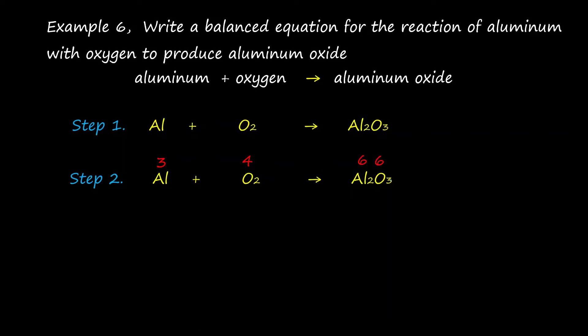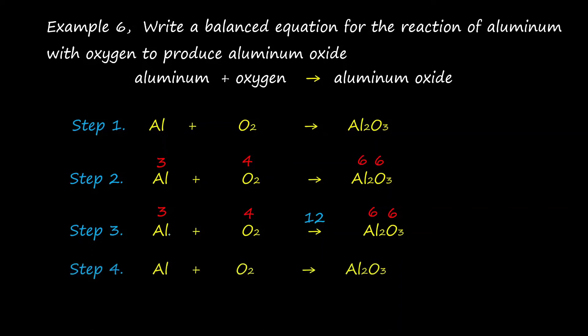The third step is to find the LCM of the total valences. The LCM of three, four, and six is twelve. Write the LCM above the arrow.